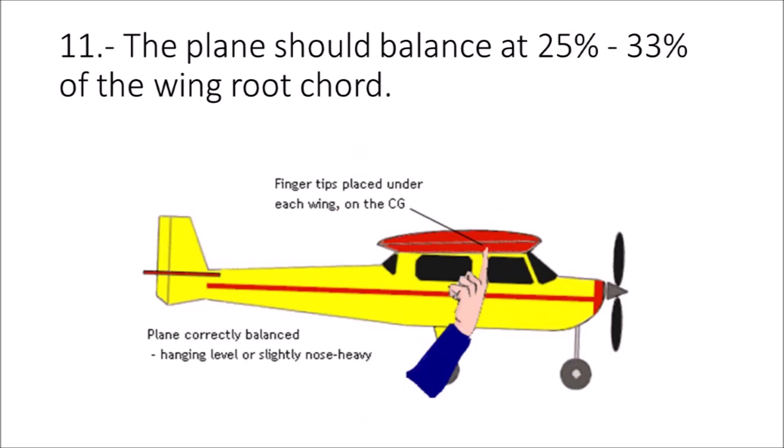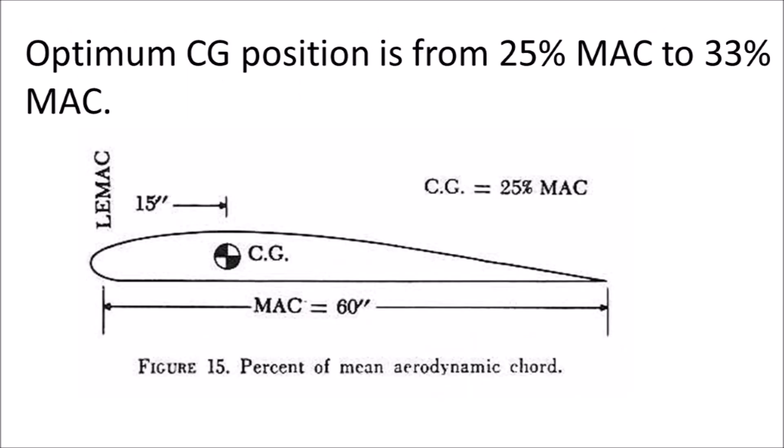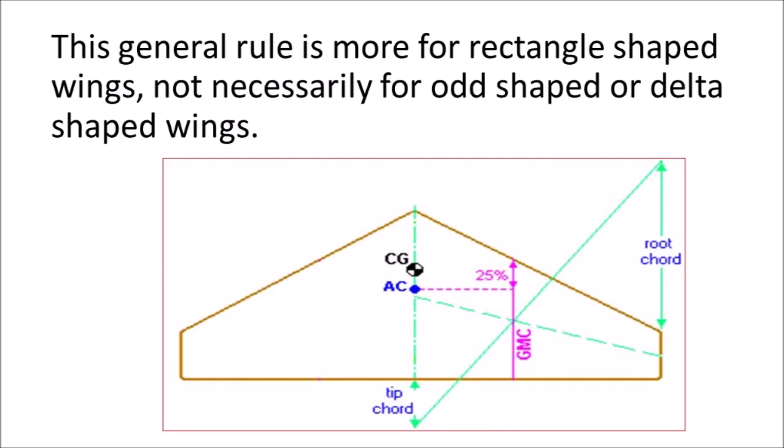The plane should balance at 25% to 33% of the wing root chord. This general rule is more for rectangle-shaped wings, not necessarily for rod-shaped or delta-shaped wings.